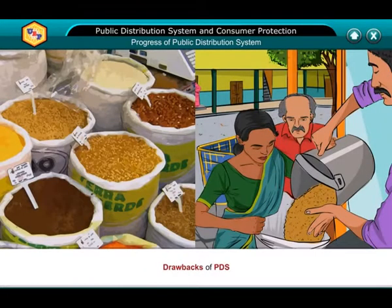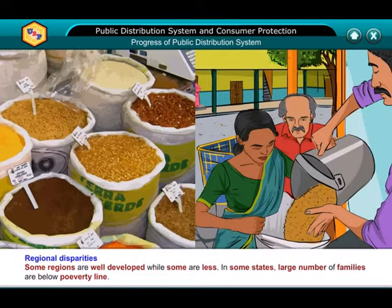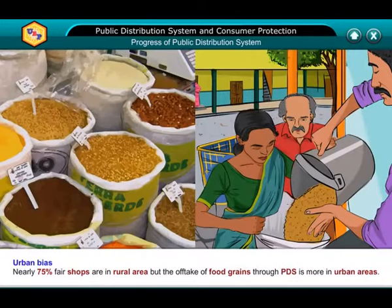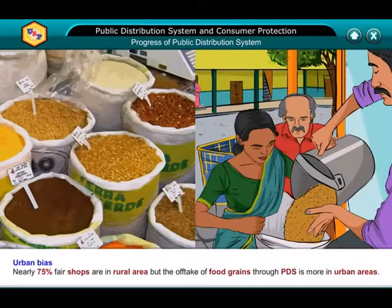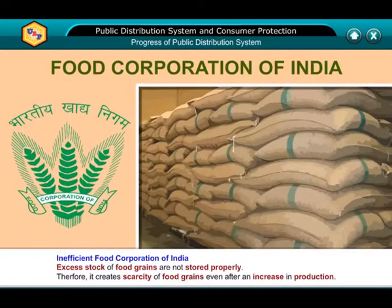Drawbacks of PDS: Limited benefits to the poor — food grains are provided to ration card holders only, issued on the basis of residential address, so homeless people are not able to get its benefits. Regional disparities exist as some regions are well developed while others are less so, and in some states large numbers of families are below the poverty line. Urban buyers — nearly 75% of fair price shops are in rural areas, but the offtake of food grains through PDS is more in urban areas. Inefficient Food Corporation of India — excess stock of food grains is not stored properly, creating scarcity of food grains even after an increase in production.